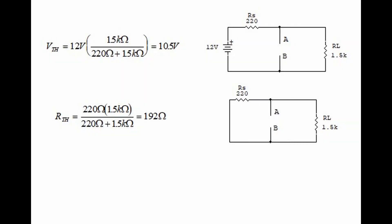We now find the Thévenin resistance by removing the power supply and replacing it with a wire. If we imagine an ohmmeter placed between terminals A and B, the Thévenin resistance is 220 ohms times 1.5 kilohms divided by 220 ohms plus 1.5 kilohms, which equals 192 ohms. Remember, this is simply the formula for finding resistors in parallel.